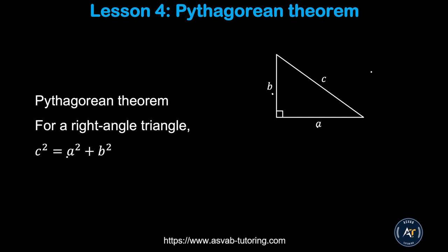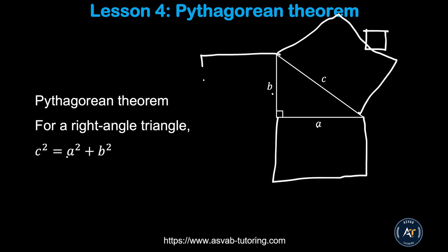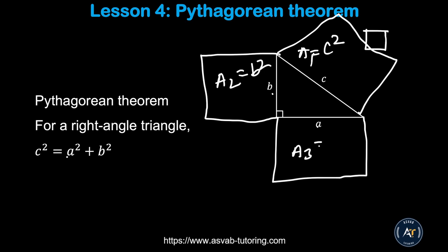What does this actually mean? A square means all sides are the same. If you draw a square on every single side of the right triangle, the area of the square on side c equals the sum of the areas of the squares on sides a and b. So area of a-square plus area of b-square equals area of c-square. Use this formula to do a practice problem so you understand better.